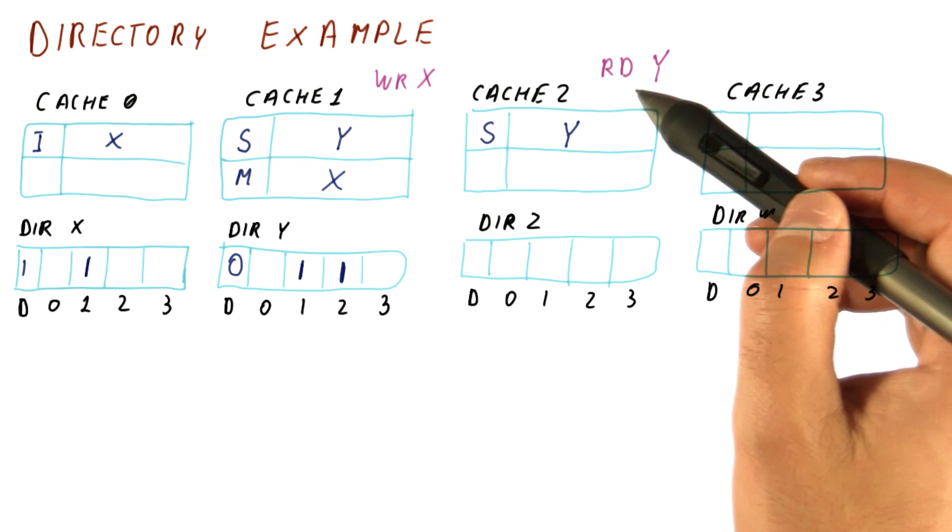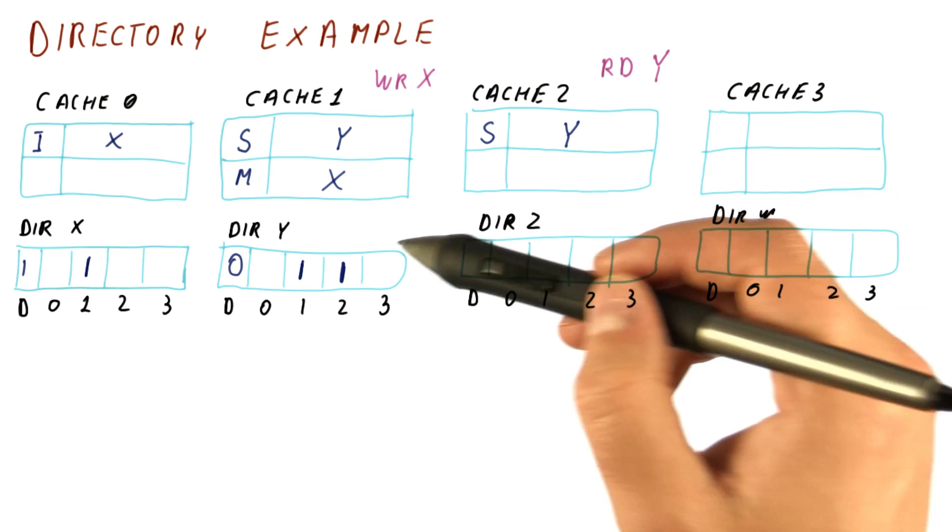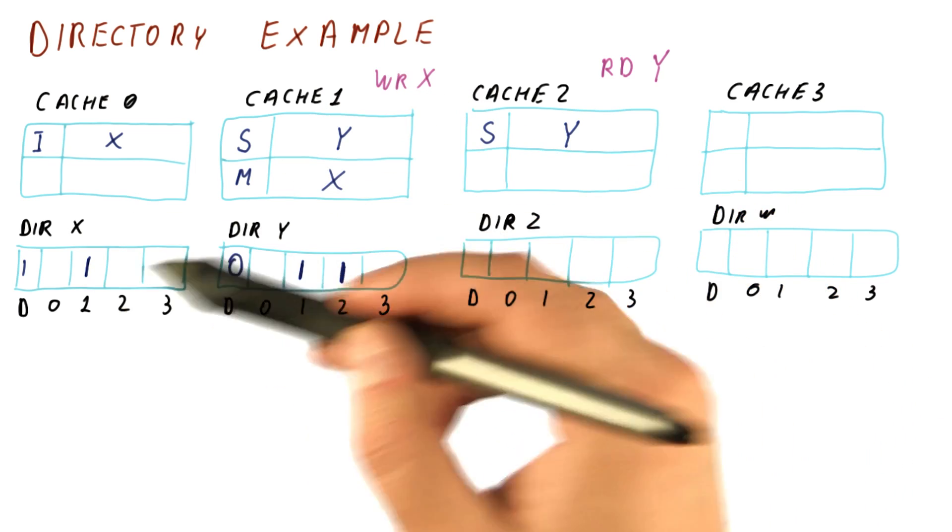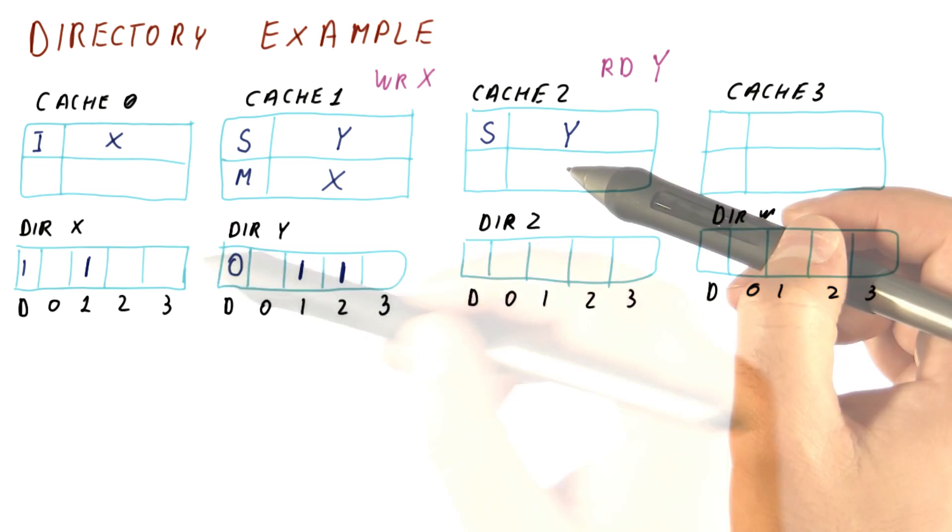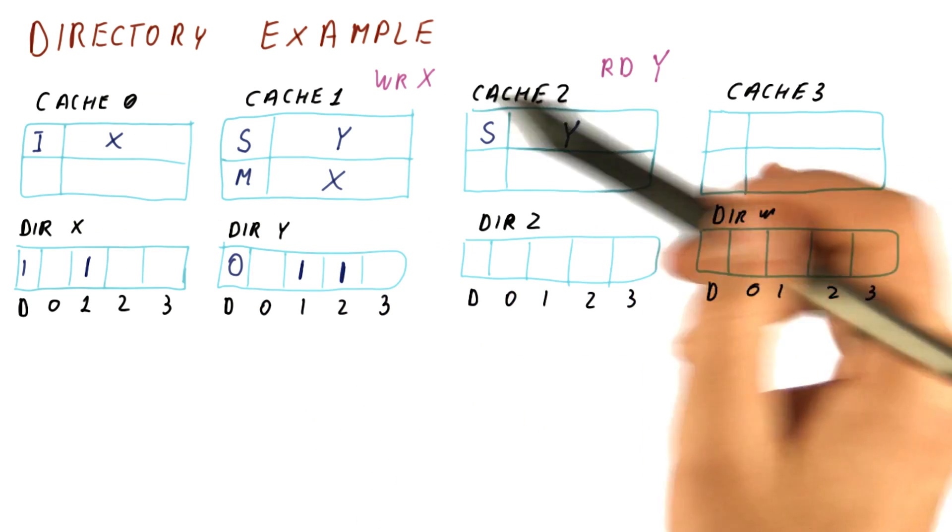This one was processed by this cache and this directory. This one was processed by this cache and this directory. And we involved other caches if necessary. But in this case, it was this cache, so these requests were still largely independent.